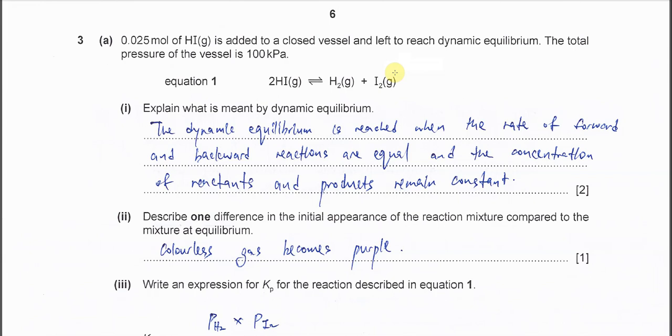Question 3, part A. 0.025 mol of HI is added to a closed vessel and left to reach dynamic equilibrium. The total pressure is 100 kilopascals. Equation 1 is given - HI decomposes to form H2 and I2, and these three compounds will reach dynamic equilibrium.